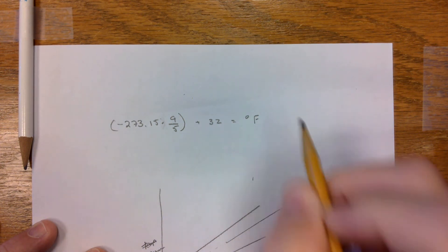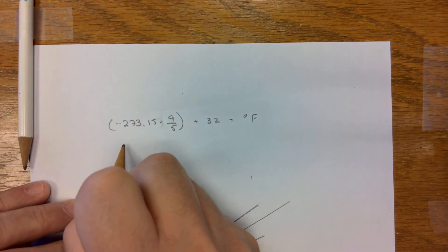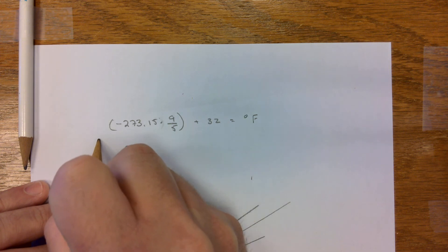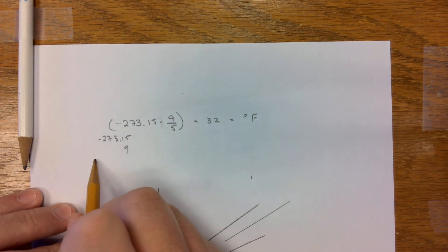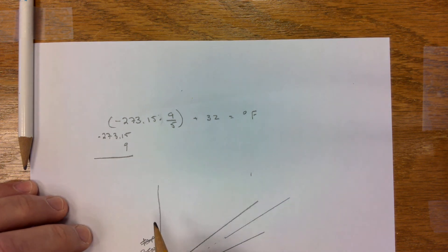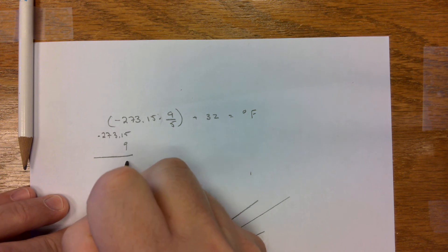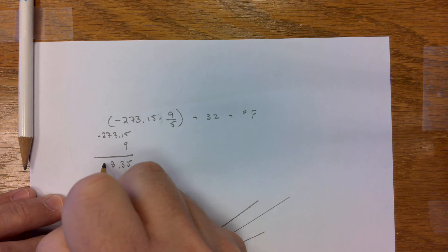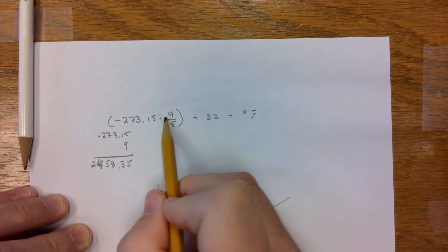So, 9 times negative 273.15. I like doing the math longhand. That's just me. You can type that into your calculator just fine. But you'll find it's 2458.35. So, now we've done half of it.